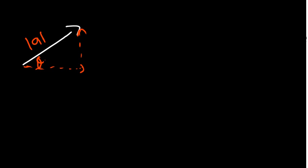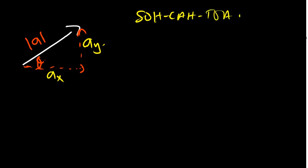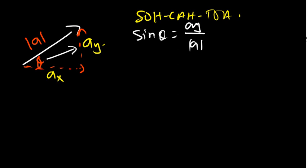We are going to say this is AX — the X component of vector A — and this is AY. If I want to find vector A provided that I know the X component as well as the Y component, we are going to be using SOH-CAH-TOA. What is sin theta? Sin theta is going to be the opposite, which is AY, divided by the hypotenuse, which is vector A.